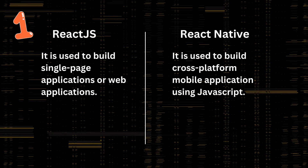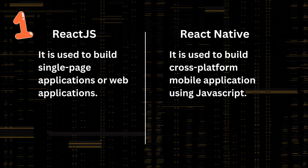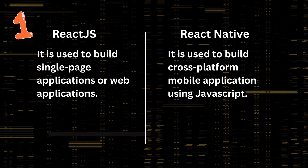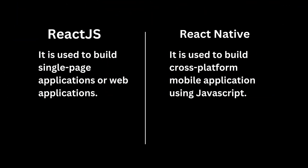Number 1: React.js is used to build single-page applications or web applications, and React Native is used to build cross-platform mobile applications using JavaScript.